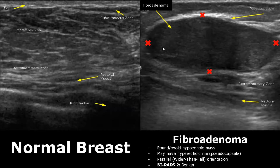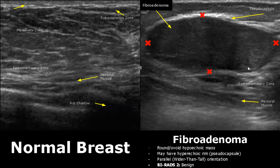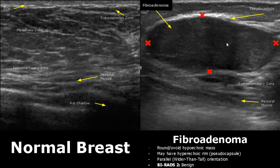A fibroadenoma is a benign tumor which will appear as a hypoechoic, round or ovoid mass. It may have a hyperechoic rim known as a pseudo-capsule, and it has a parallel orientation — it is wider than tall. This is a sign of a benign lesion. It is classified as BI-RADS 2, though routine screening mammography should still be done.